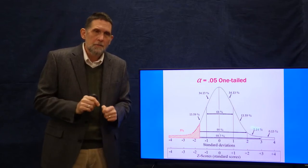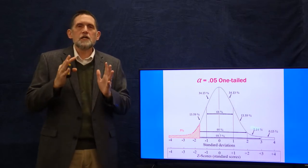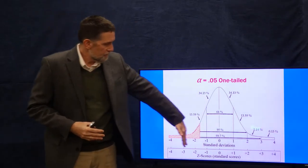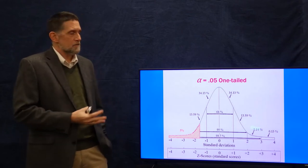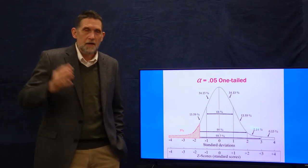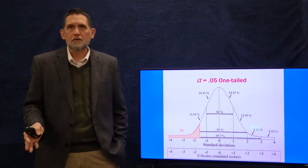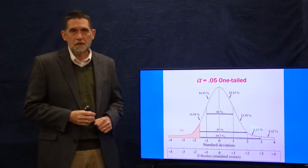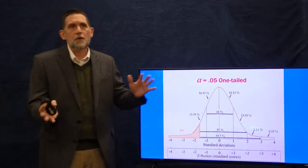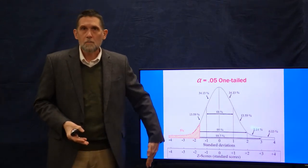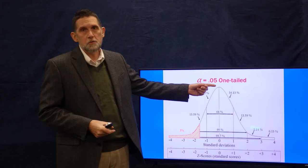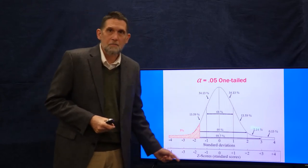In a one-tailed test, we're only looking at one side of the distribution. Is that individual less than — are they at this side of the distribution? We might ask: is unhappy me less happy than everybody else in the population, and therefore not part of that population because they're less happy? We allow people who are really happy to remain part of the population — we're only looking at the lower part. Using a critical value of alpha = 0.05, we're looking at a full 5% of the population.